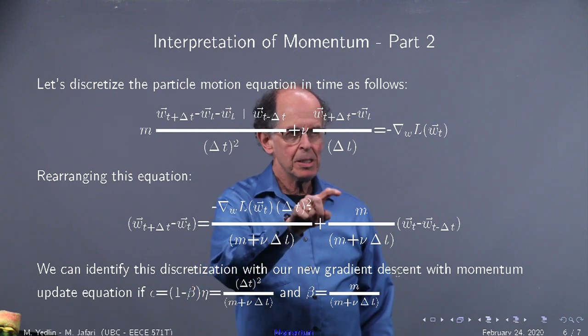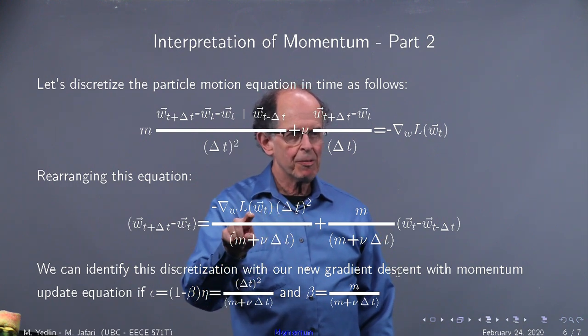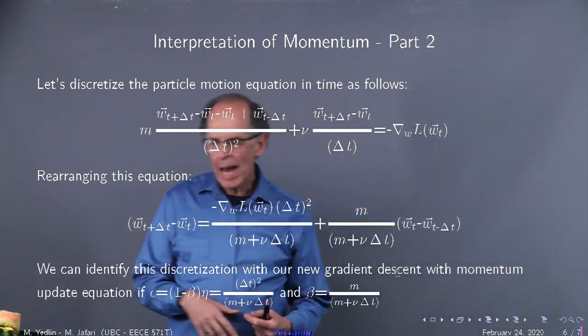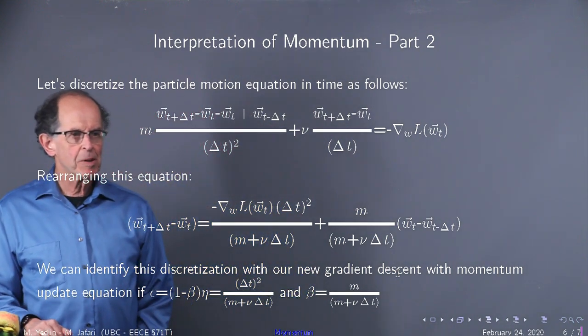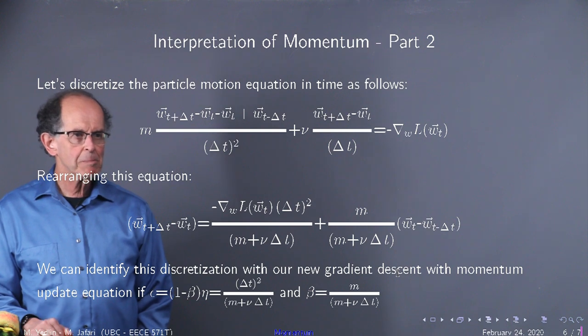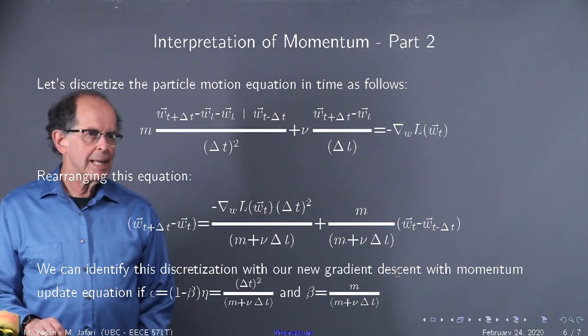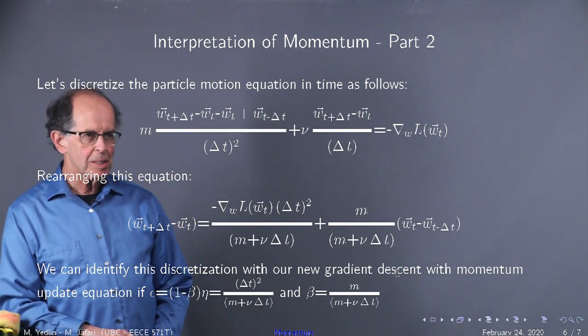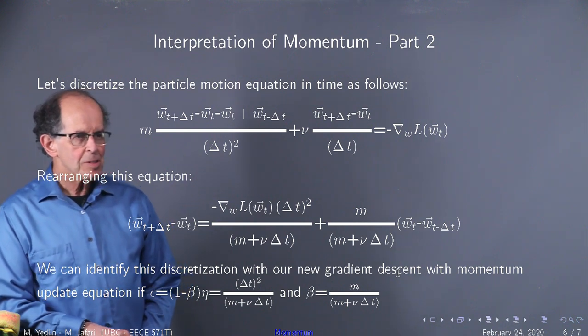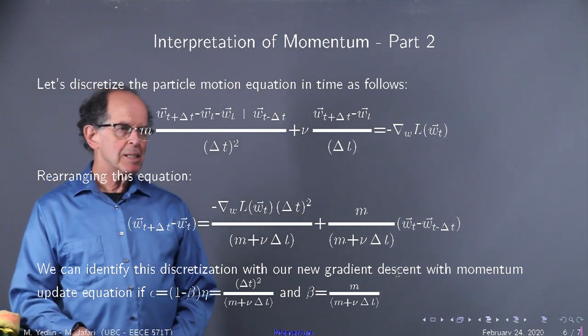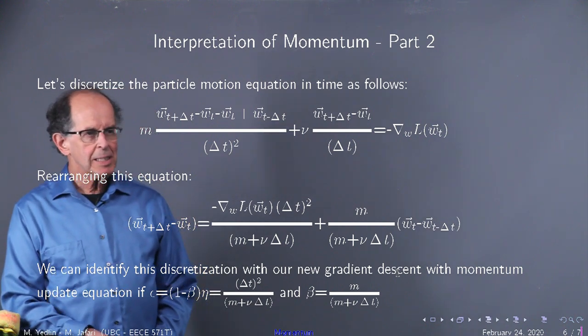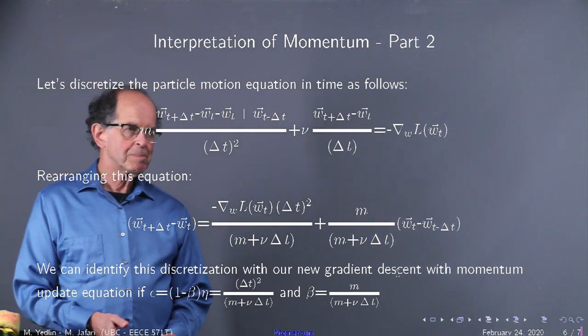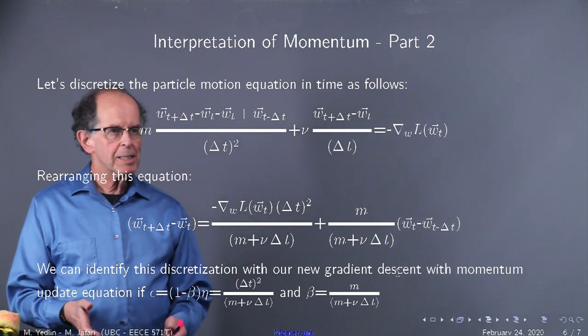Now, look, we have a term here that modifies the force term. And just by comparison, we'll get exactly the same formula as the momentum formula if you identify previously epsilon with 1 minus beta eta, and beta is identified with m. Now, let's think about this. As the viscosity goes up, then beta is going to get really, really, really tiny. The viscosity is lower, it's going to get larger. So, there's a relationship between beta and nu.